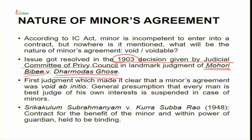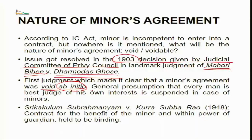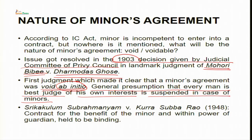Then came the landmark 1903 judgment of the Judicial Committee of the Privy Council in Mohri Bibi versus Dharmadas Ghosh, which was the first judgment making it clear that a minor's agreement was void ab initio. Ab initio is a Latin phrase meaning 'from the very beginning' — of no value in the eyes of law from the very inception itself. The general presumption that every man is the best judge of his own interests is suspended in the case of minors, which is the reason a minor's agreement was held void ab initio.